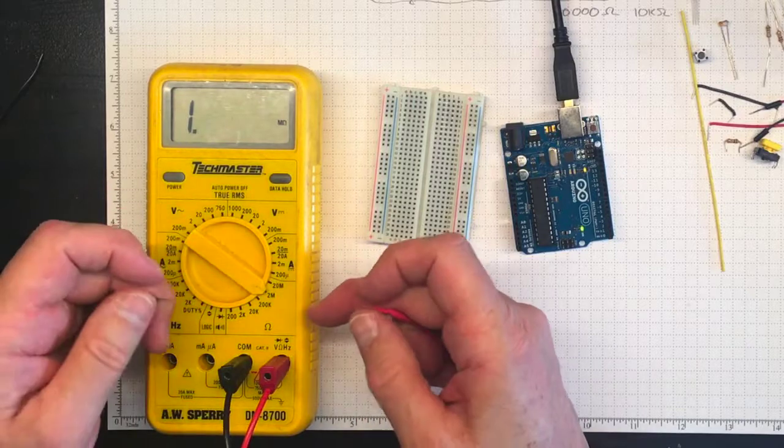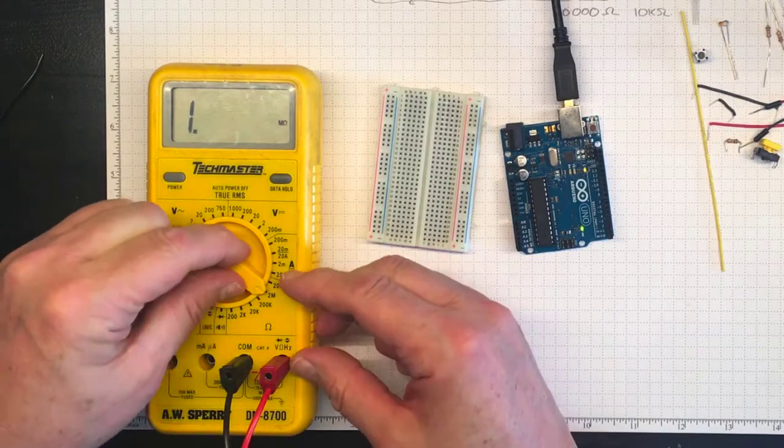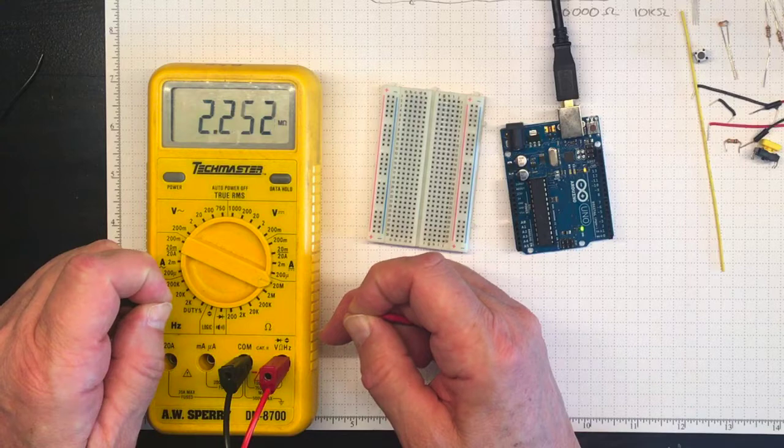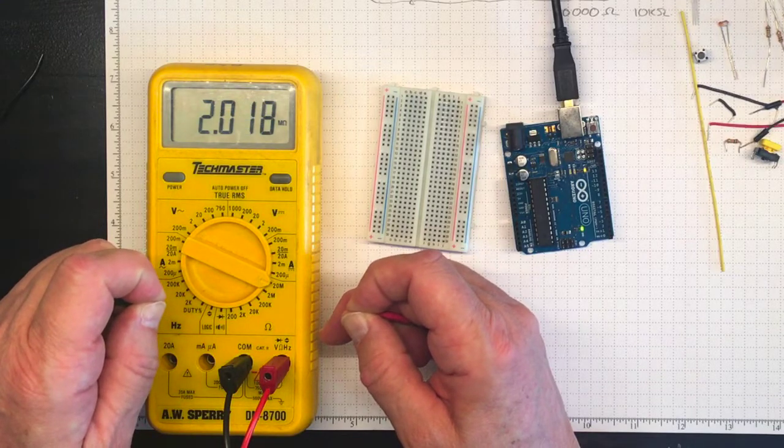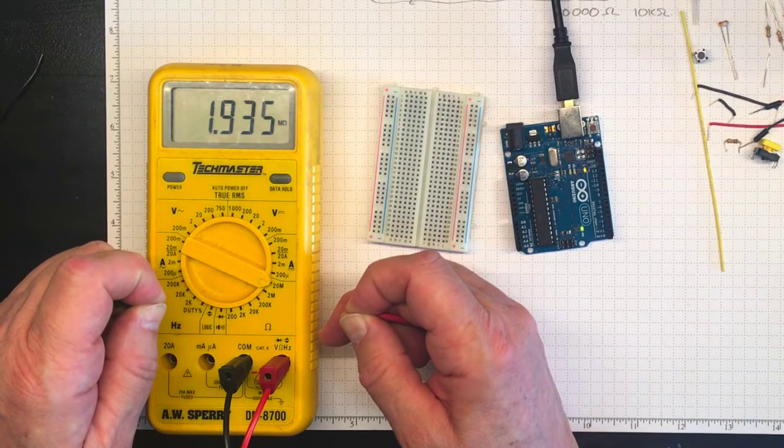Now I'll measure my own resistance by pinching the leads. It's somewhere in the millions of ohms, which means that putting that in parallel with these other smaller resistances really doesn't change the measurement.